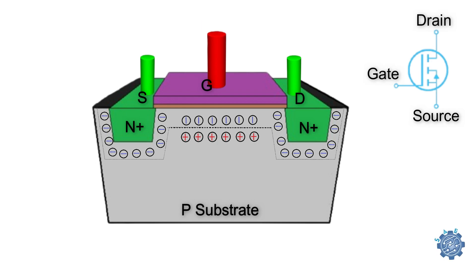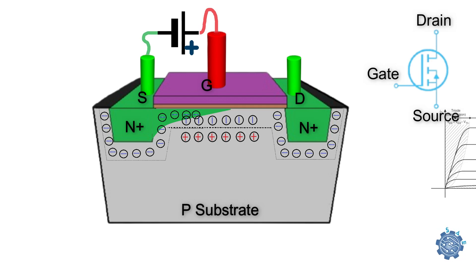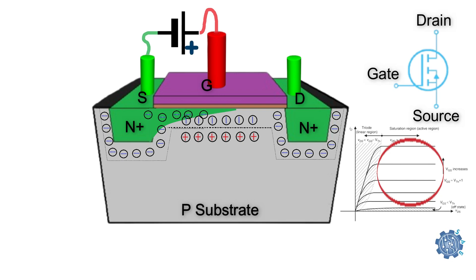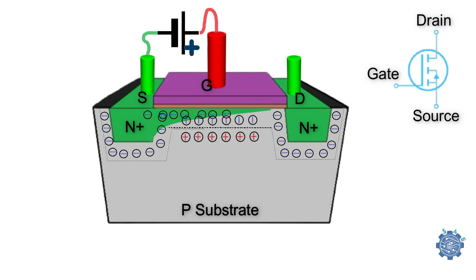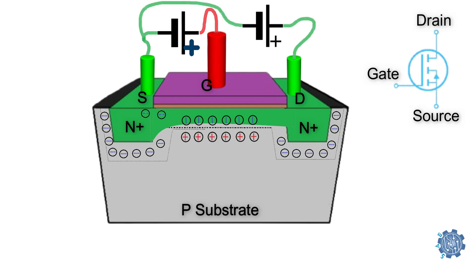Additionally, to this depletion region, a number of electrons from the source start migrating towards the drain as the voltage between gate and source increases. Until this voltage does not exceed the threshold voltage, charge carriers are not connecting all the way towards the drain, and the transistor is operating in the saturation region. If the voltage continues to increase, it increases the electric field, which attracts more electrons from the source, finally creating the connection between source and drain. Now, if a voltage is applied between the source and drain, the current will flow and the MOSFET is operating in the linear or triode region.